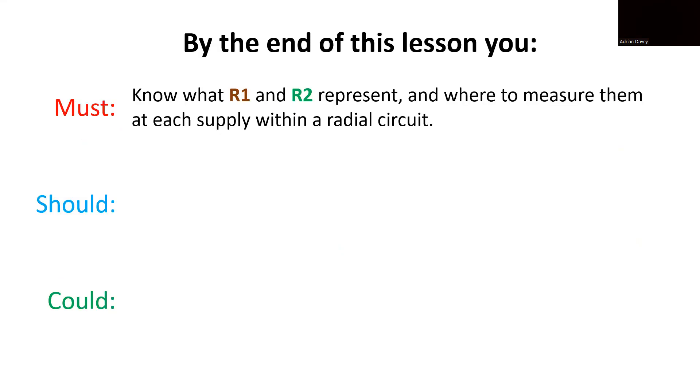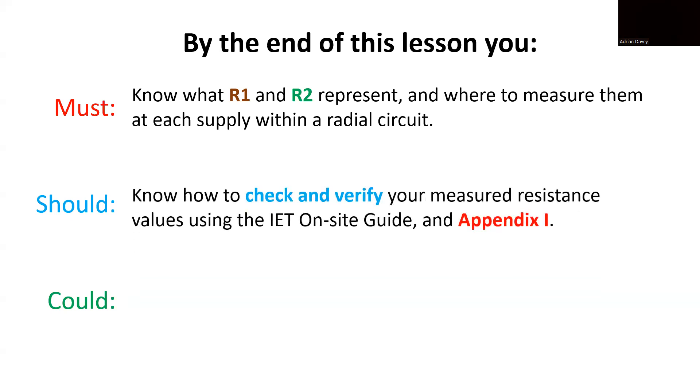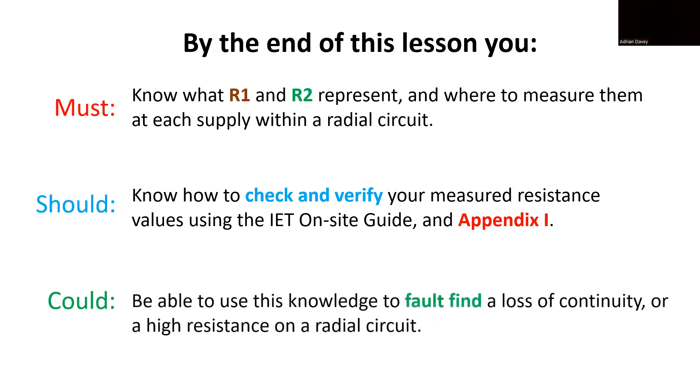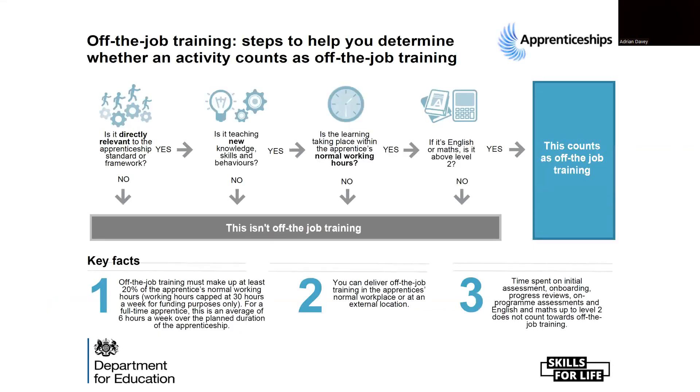Hopefully, you know what R1 and R2 represent, and where to measure them at each supply within a radial circuit. You should know how to check and verify your measured resistance values using the IET on-site guide and appendix I. And some of you could be able to use this knowledge to fault find a loss of continuity or a high resistance fault on a circuit. Well, that concludes part one of this video, where we explored the process of verifying R1 plus R2 within a radial circuit, particularly in a lighting circuit, and how to validate the results you obtain.